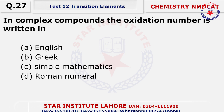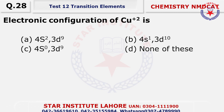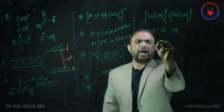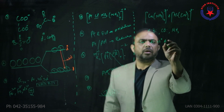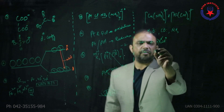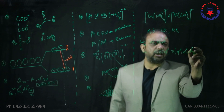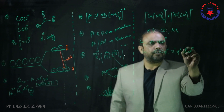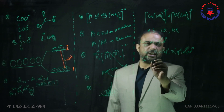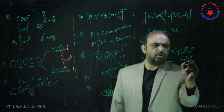In complex compounds the oxidation number is written as a Roman numeral. Question twenty-nine: the electronic configuration of Cu2+. First write copper's configuration — atomic number 29, so after argon it should be 4s2 3d9, but the actual configuration of the copper atom is written as 4s1 3d10. When Cu2+ is formed by removing two electrons, it becomes 3d9, 4s0 — so the choice is charlie.